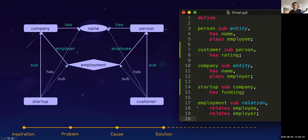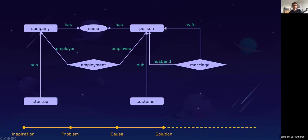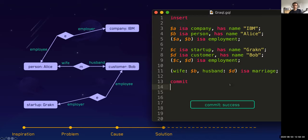The question is, can a startup employ customer? And the answer is yes, because again, they inherit those properties and that's where the type inheritance comes into play. Let's say we extend the model and we create a marriage relation. There may be a wife, a husband, if we're talking about old school marriages. And we want to now insert data.